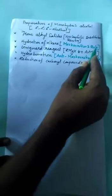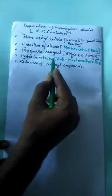First method: from alkyl halides undergoing nucleophilic substitution reaction. Second method: hydration of alkene undergoing Markovnikov's rule. Third method: Grignard reagent. Fourth method: hydroboration following anti-Markovnikov's rule. Fifth method: reduction of carbonyl compounds.